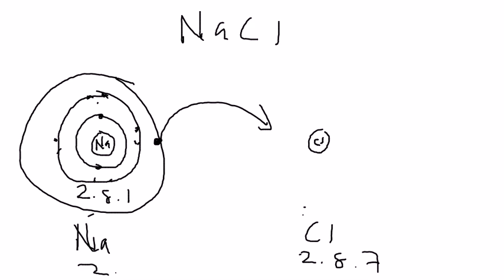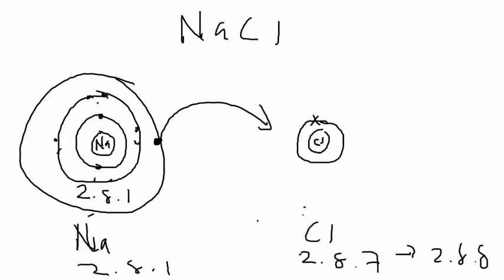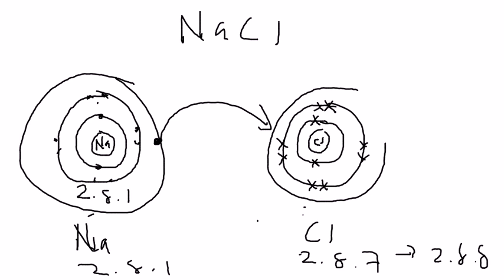Sodium is 2.8.1. Once chlorine receives one electron from sodium, it will become the chloride ion: 2.8.8. So let's draw the first ring — two crosses — then the second ring. The other non-metal must use crosses. In the last ring we have seven crosses, which is the original electrons chlorine has, and it receives one dot from sodium.